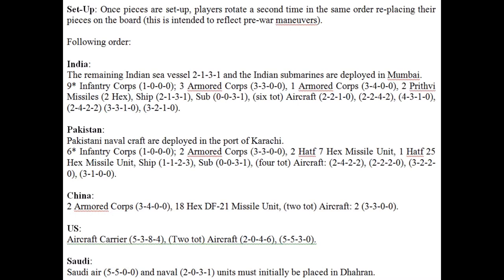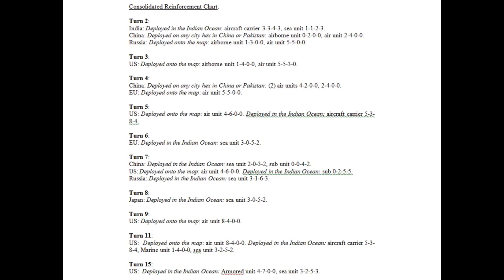The consolidated reinforcement chart shows which pieces arrive each turn — for example, in turn two, India, China, and Russia have units deployed. European Union, Russian, or American aircraft can be deployed anywhere they are invited. Chinese aircraft can be invited into Pakistan. American aircraft can be invited into both India and Pakistan, though it almost never happens. Russians may deploy their airborne unit at a particular location, as can the Americans. All ships are placed anywhere on the blue part of the map with basically unlimited movement.